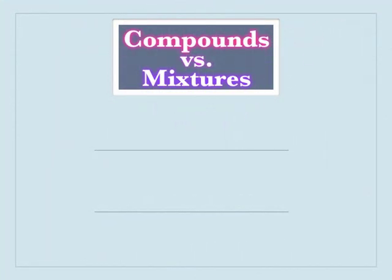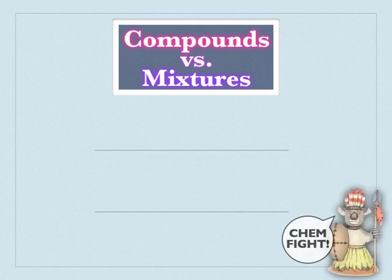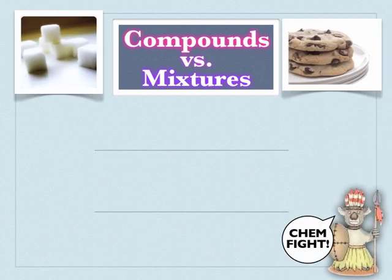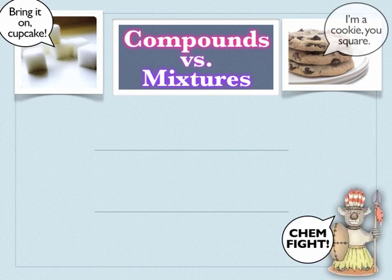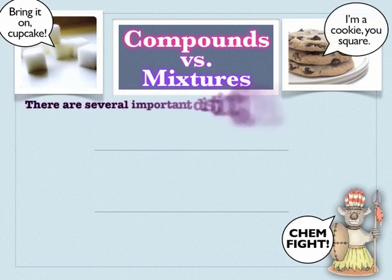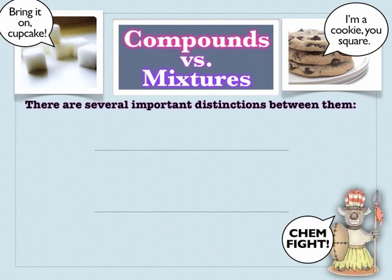So compounds vs mixtures — can fight! In the left corner representing compounds we have sugar, and in the right corner representing mixtures we have cookies. Remember, compounds are always going to be a single pure substance — they're composed of only one type of molecule, no matter how big or complex that molecule is.